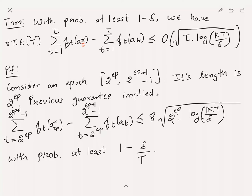Let's look at the proof. Consider some epoch from 2^ep to 2^(ep+1) - 1. The length of this epoch is 2^ep time steps. The previous hedge guarantee implies that between time steps 2^ep and 2^(ep+1) - 1, the difference between the best action in hindsight for this epoch and the algorithm's cumulative payoff is at most 8 * sqrt(2^ep * log(kT/delta)), with probability 1 - delta/T, so we can later take a union bound over all T time steps.